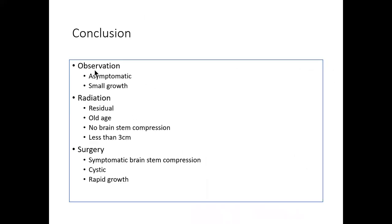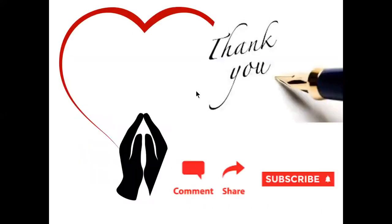In conclusion: observe the patient if asymptomatic or small, non-growing tumors. Go for radiation if the patient is elderly, no brainstem compression, less than 3 centimetres, and non-cystic lesion. Go for surgery if there is symptomatic brainstem compression, cystic lesion, or rapid growth. Analyze the patient's symptoms, imaging findings, growth pattern, and Koos grading, and take decisions accordingly — giving the option to patients when two treatments are equally appropriate. Thank you very much.